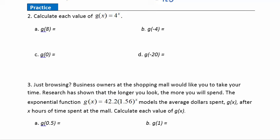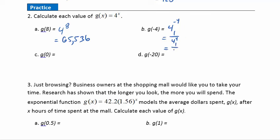Practice question 2: g(x) = 4^x. For g(8): on the calculator, 4 to the eighth power gives 65,536. For g(-4): 4^(-4) = 1 over 4^4 = 1/256.